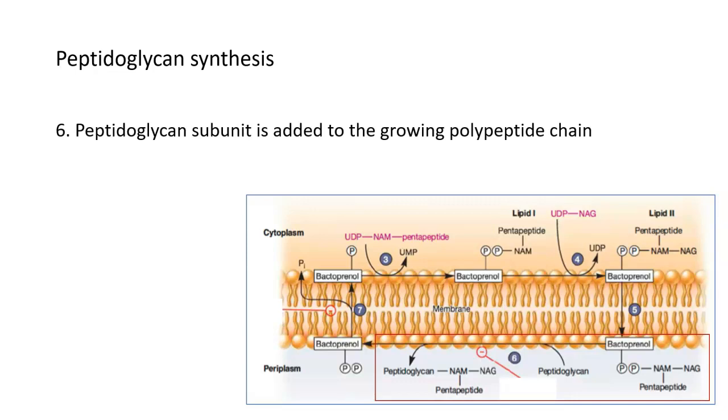And now that bactoprenol did its job and it brought the subunit outside to where the cell wall is, you don't need bactoprenol anymore. It's going to drop off the subunit to a growing peptidoglycan chain on the outside. And bactoprenol basically allows this subunit to be released and it can be added to the peptidoglycan wall.